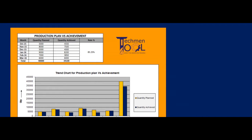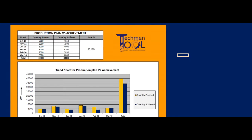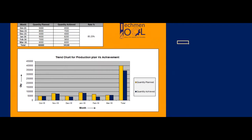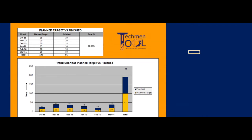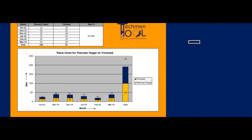These are the sample KPIs of the PPC department. A trend chart shows the percentage rate of planned versus achieved quantity, planned target versus finished, machine capacity versus actual output, breakdown analysis, and OEE analysis.